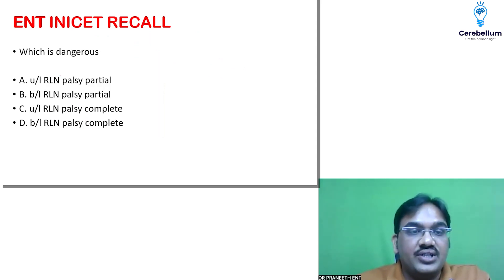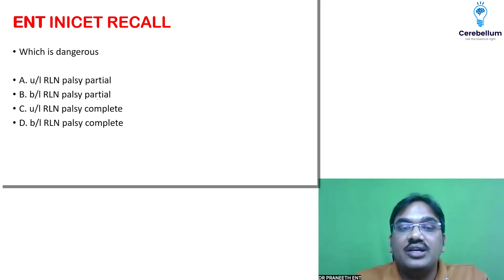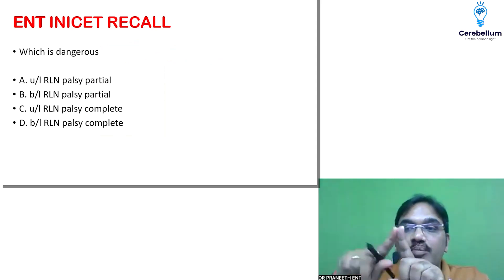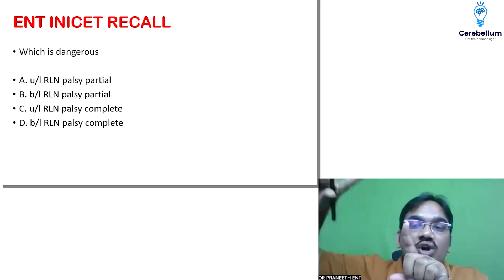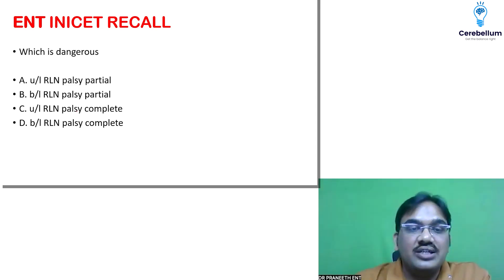Which is more dangerous — unilateral or bilateral RLN palsy? In unilateral RLN palsy, only one vocal cord will be in the paramedian position; the other vocal cord will be moving. So while breathing, the other vocal cord will abduct and the patient can breathe. Compared to unilateral, bilateral is always more severe and dangerous.